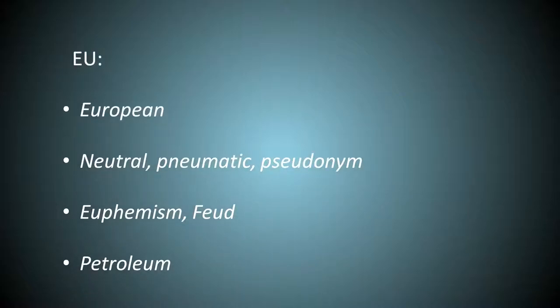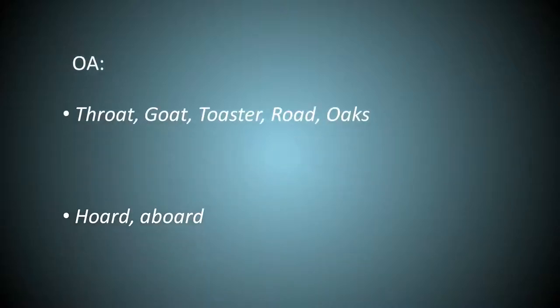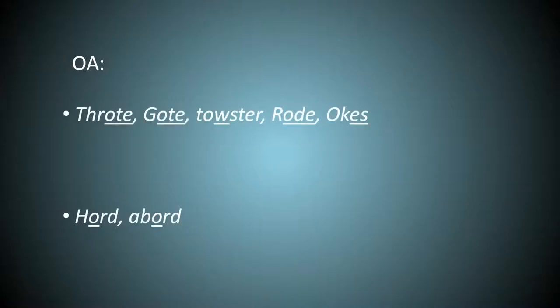For EU, we have your, oo, you, ear. They will be changed like so. For petroleum, I added an I because the E should be silent. For OA, we have O and OR. Most can be replaced with the vowel consonant E rule. Toaster required an OW. And the last can be replaced with OR.